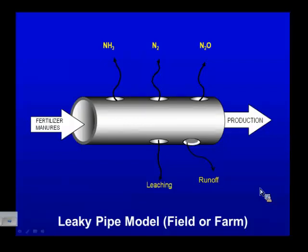So let's say you put your finger over the hole for ammonia because you're applying manure now with a low-emission application technique. You will likely get some more nutrient loss by leaching and runoff as long as your production, your removal, does not match your inputs. This is simple in concept but really difficult to implement in reality.